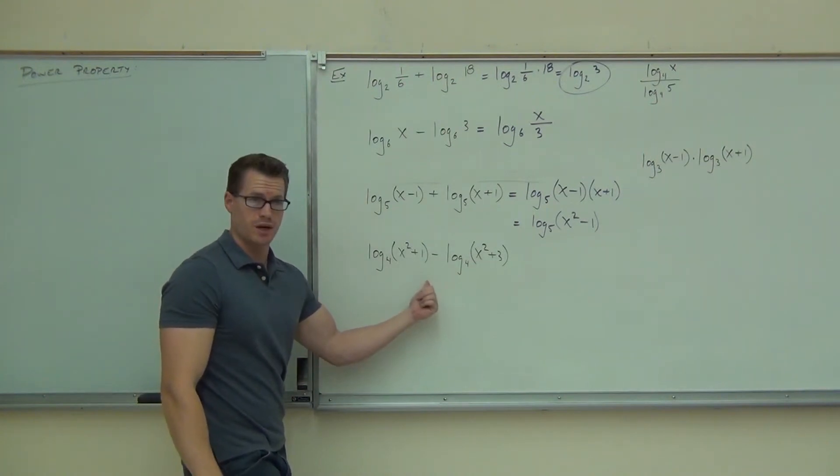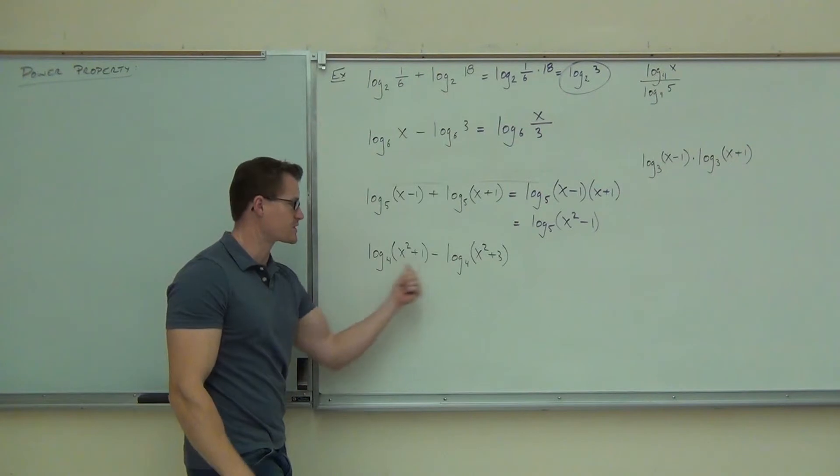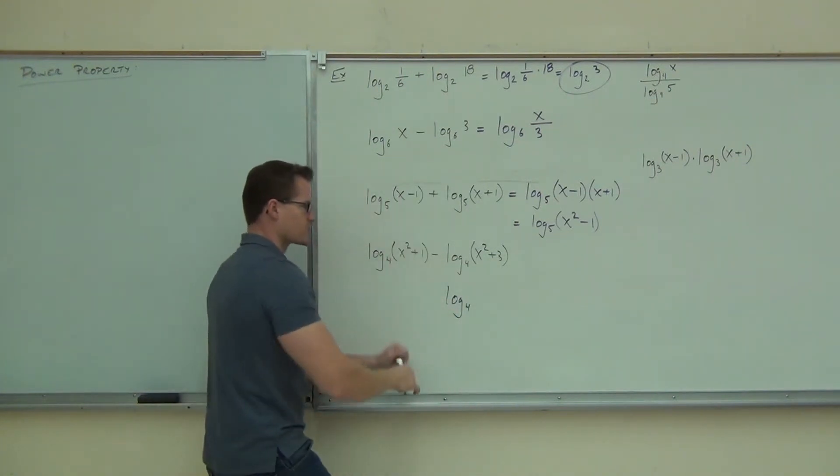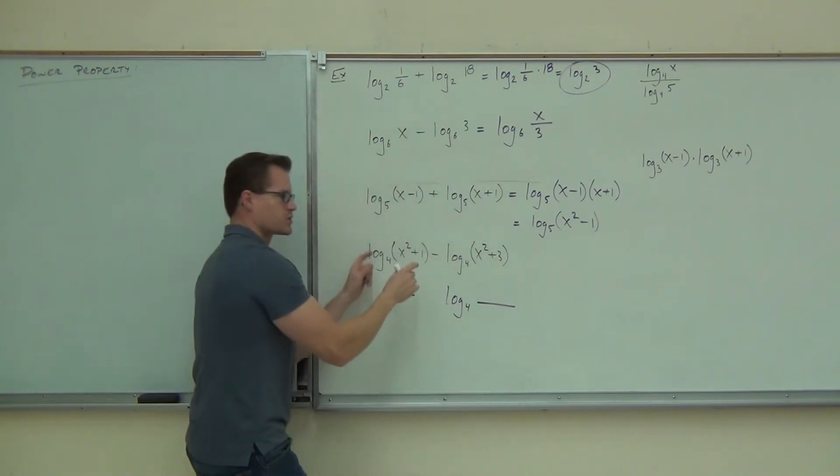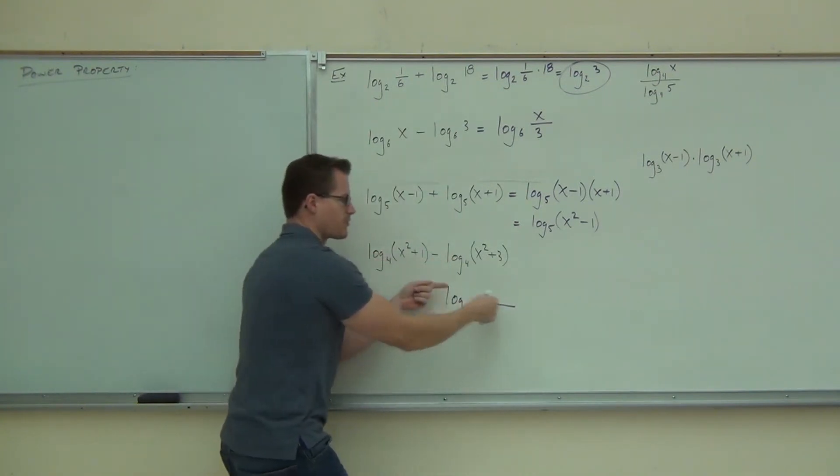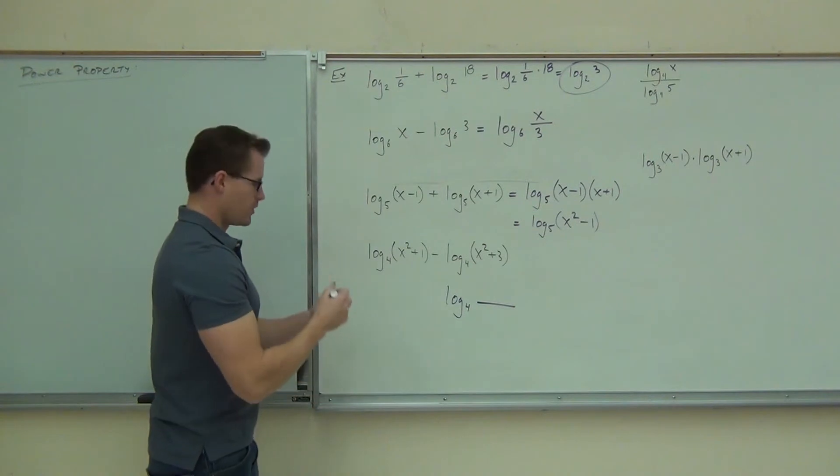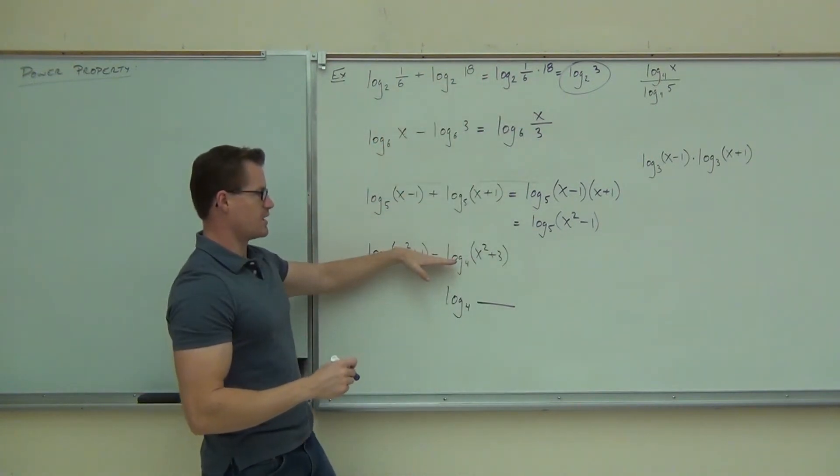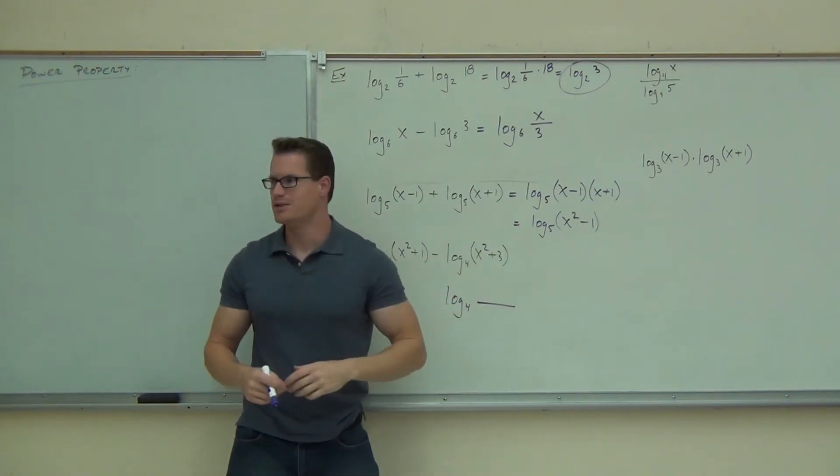Sure, we got a subtraction. That's great. We know that's part of our quotient property. We got the same base. This would be log base 4, a single logarithm, not two logarithms, single logarithm, of a fraction because we know that this subtraction makes a fraction out of it. But the way I always remember is that the P's go together plus product and the straight lines go together minus quotient.